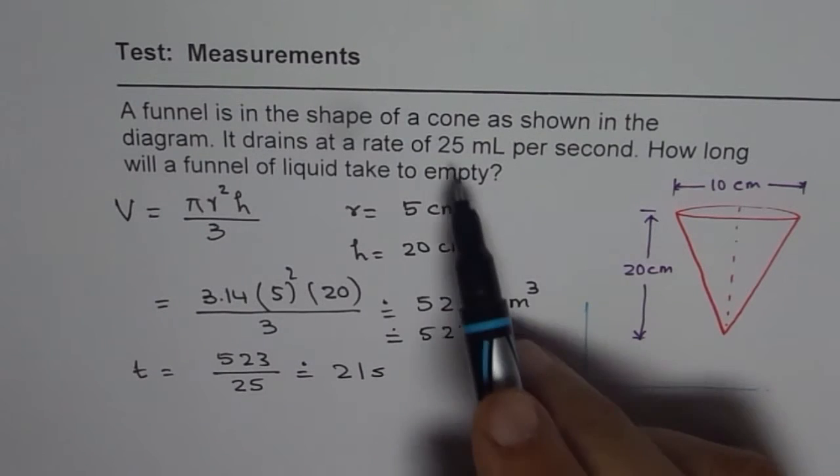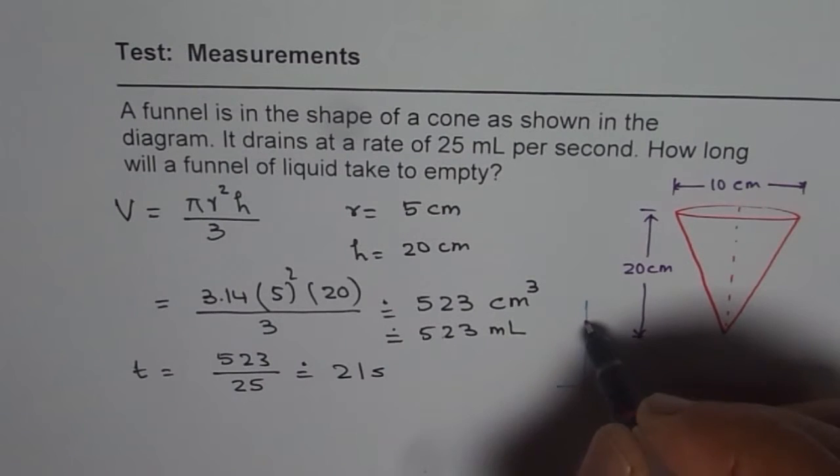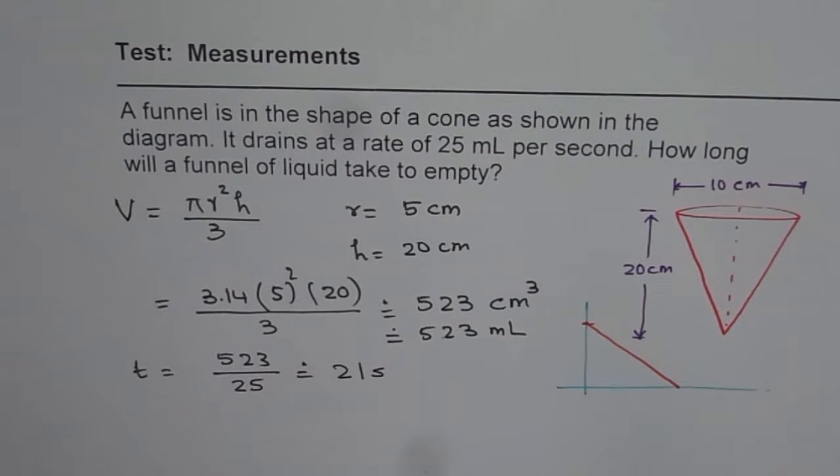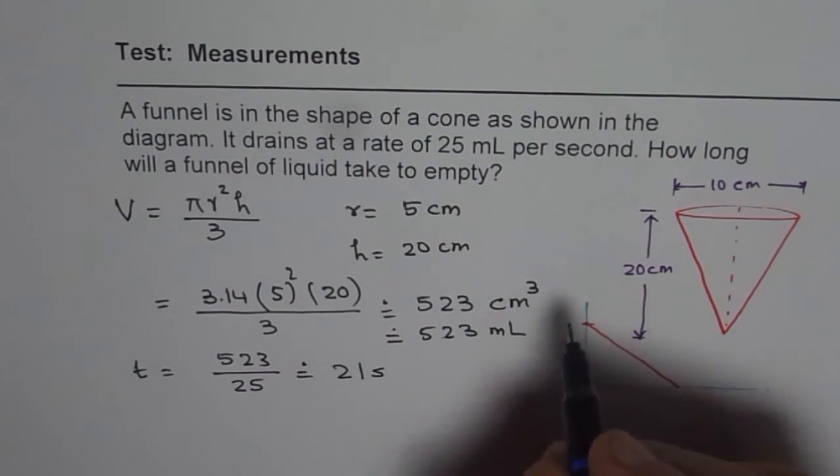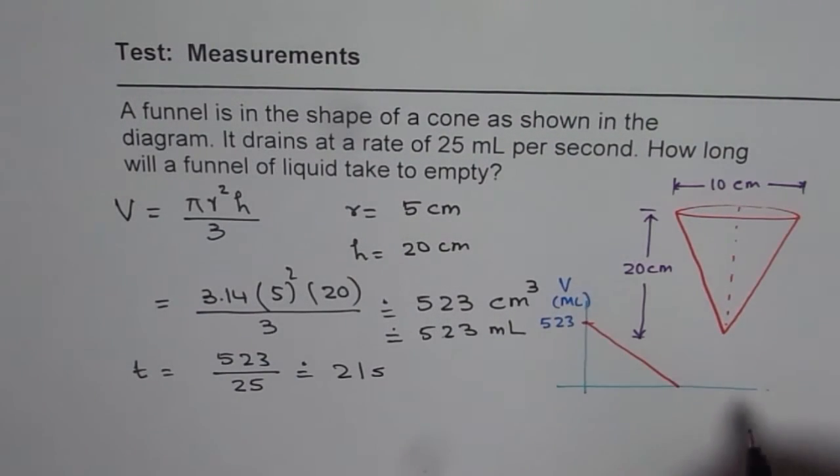Since it is draining at a constant rate, the graph is like this where the starting value is the volume when it is totally filled up, it is 523 milliliters, so that is the volume in milliliters. And here we have time in seconds.